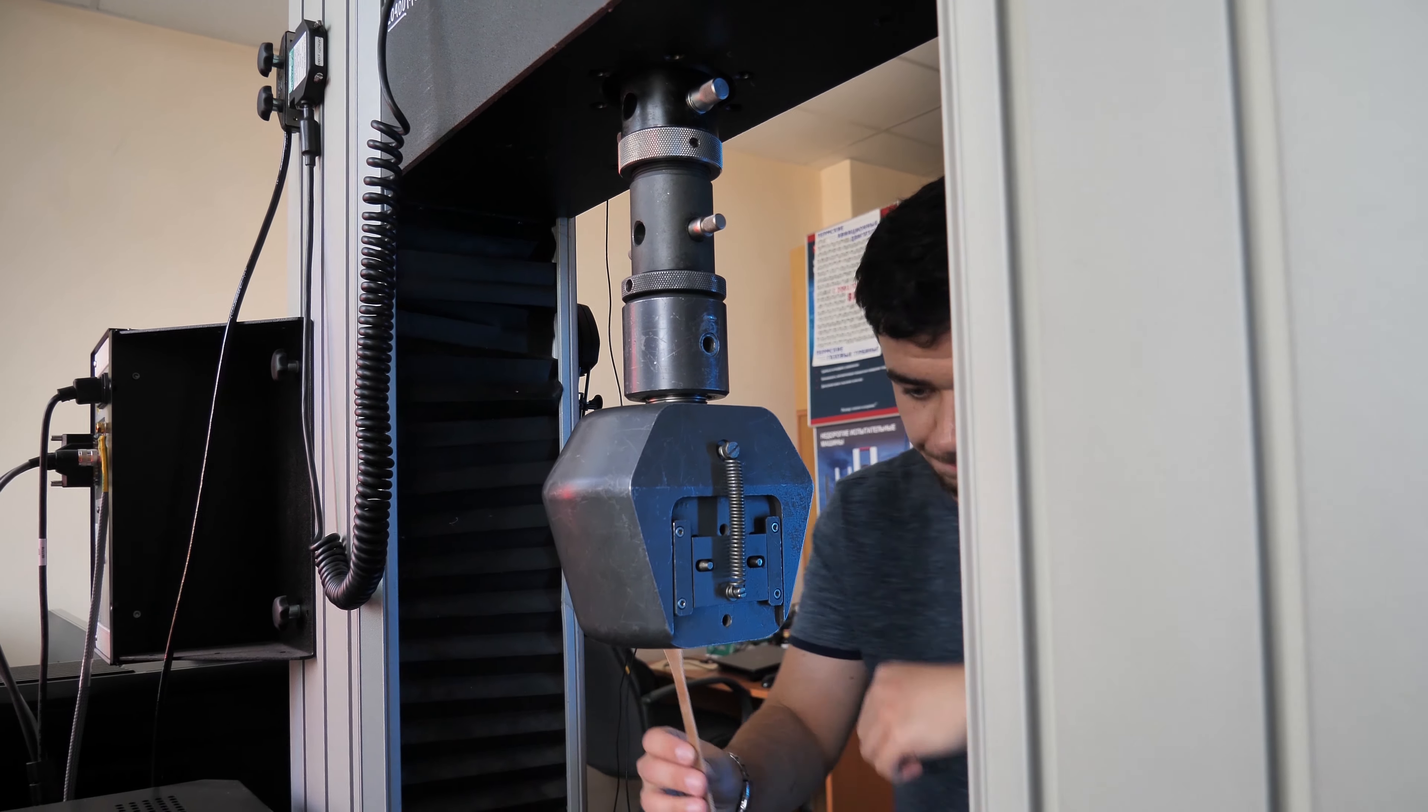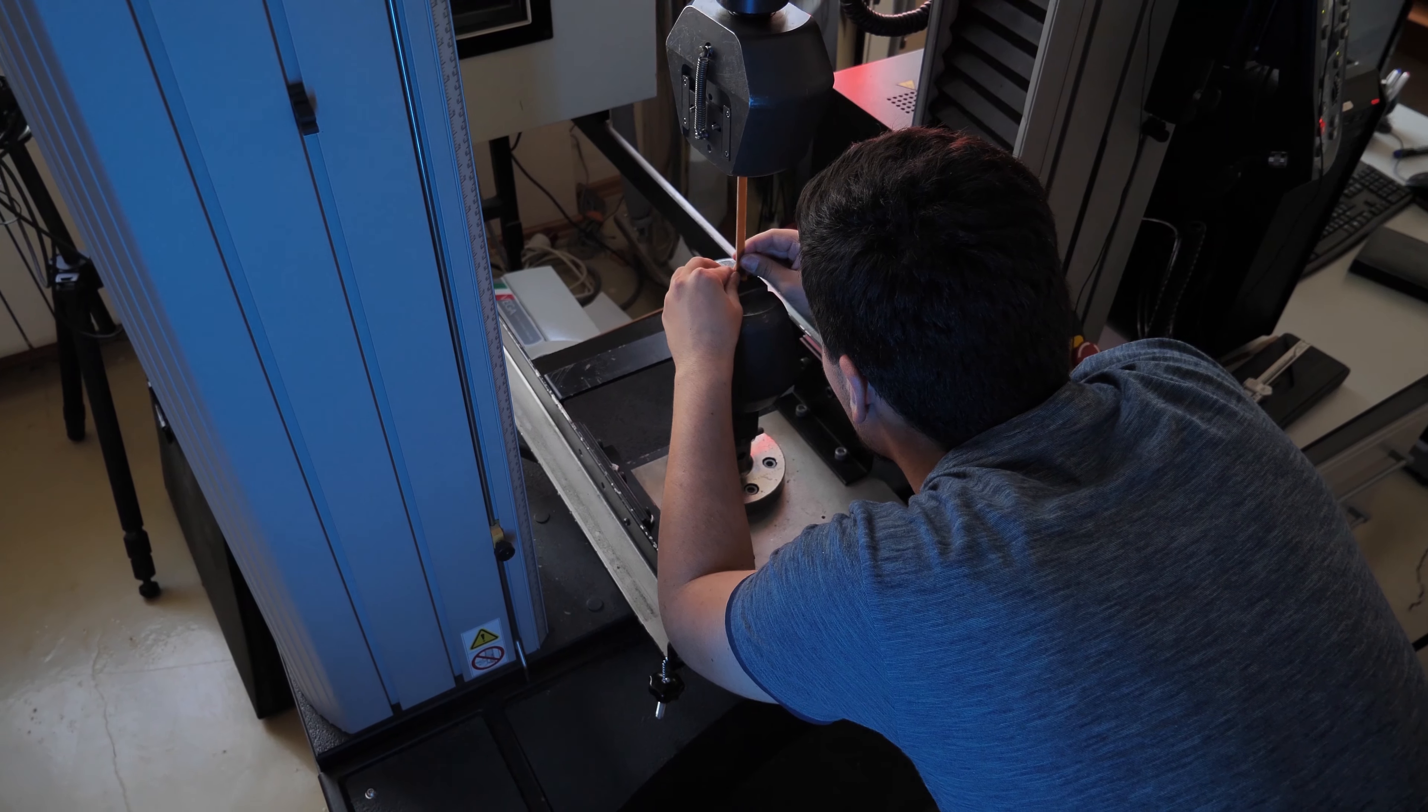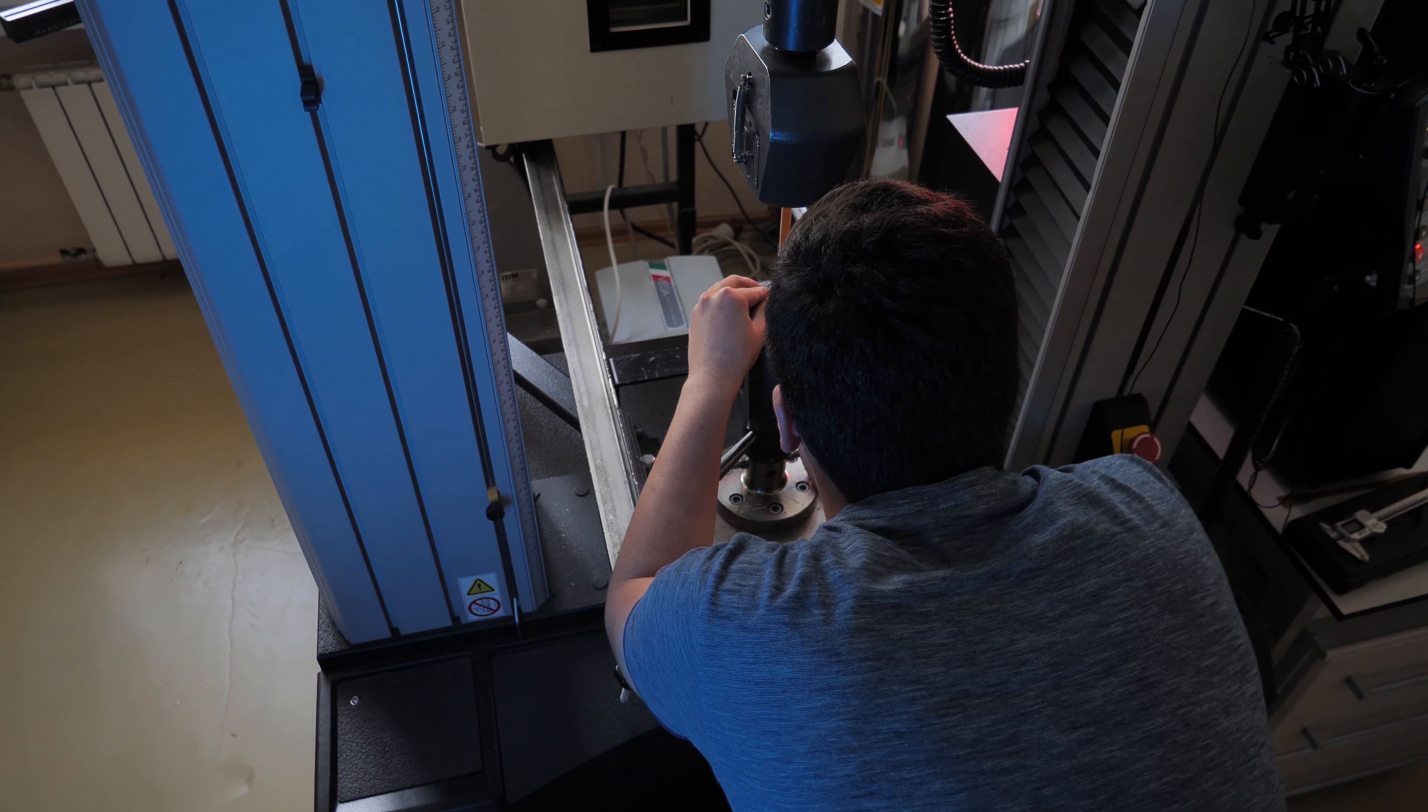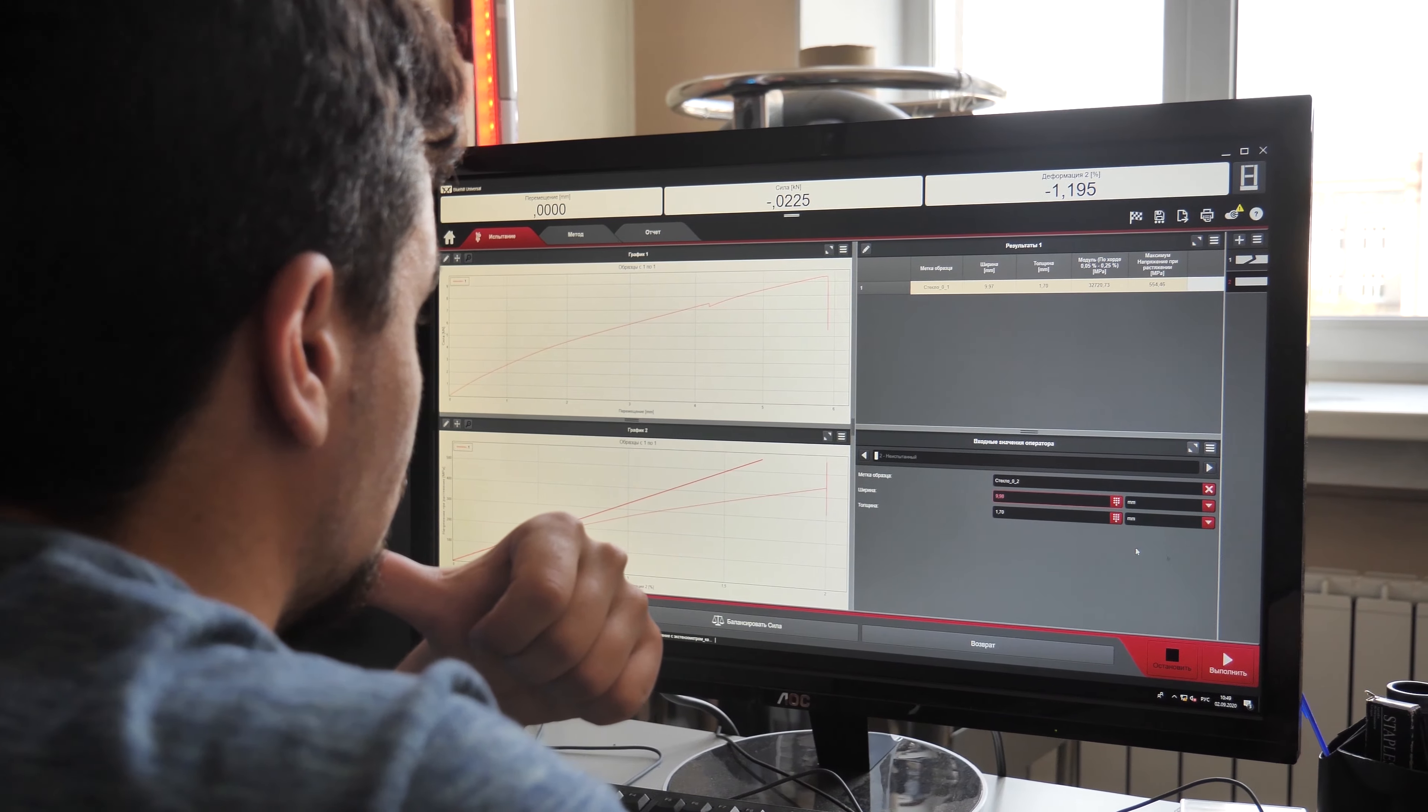After we determine the properties of the materials, we put them in the design model, get the results, and make sure that the structure will be strong and reliable. Next, we make a prototype in the mechanical engineering laboratory or in the composite materials laboratory and conduct tests using the equipment that we have.